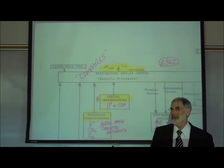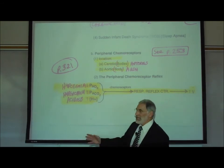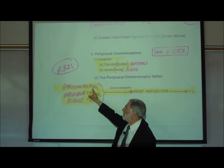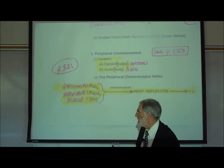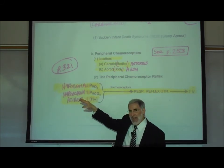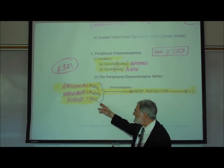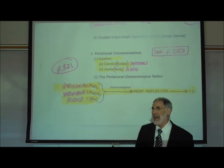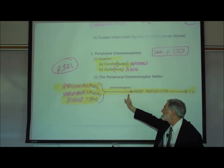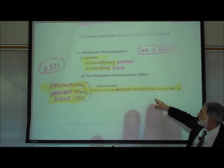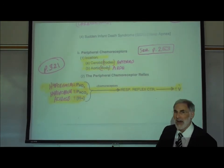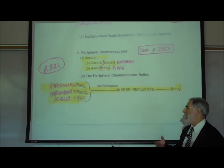Returning to the bottom of page 321: whenever there is a decrease in oxygen levels in systemic arterial blood — hypoxemia — or an increase in carbon dioxide level — hypercapnia — or an increase in acidity — acidosis or acidemia — the chemoreceptors in the aortic arch and carotid arteries send this information to the respiratory reflex center. In response, it increases the rate and depth of breathing and causes bronchodilation. Oxygen levels do influence the respiratory reflex center; they are simply not the major factor.